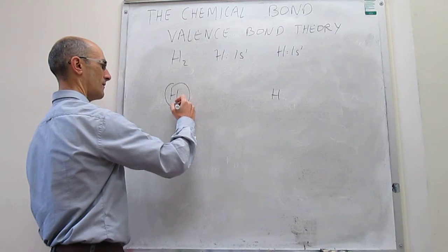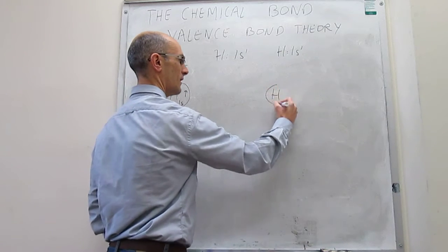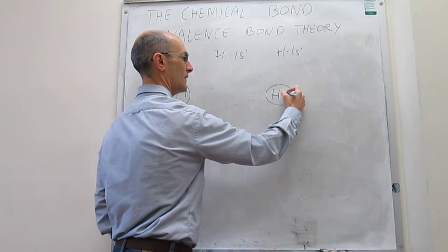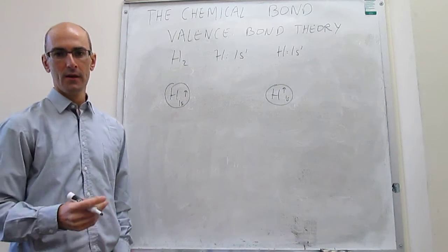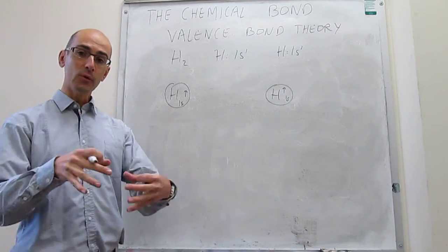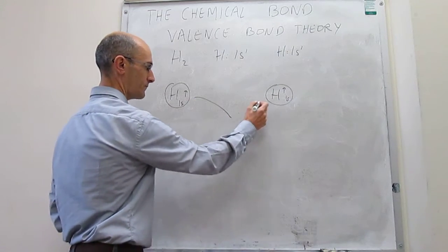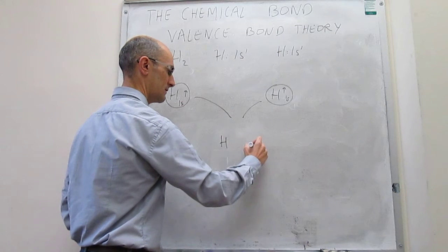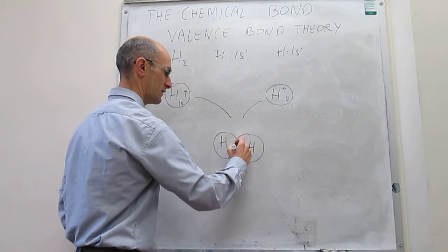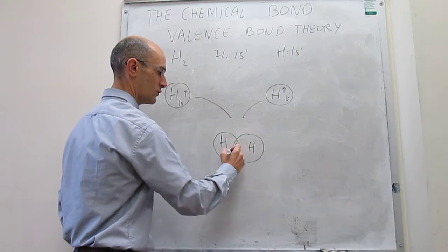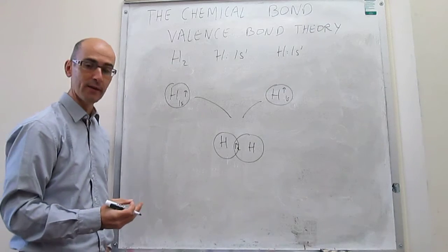For H₂, we have atom H with a 1s orbital and one electron, and the other atom H also has a 1s orbital with one electron. The bond forms when these two wave functions of the separated atoms overlap. You can draw the molecule showing this overlap of the two wave functions, and because now the two electrons can be shared between the two atoms, that gives rise to a covalent bond.